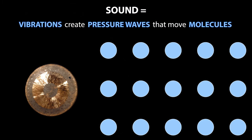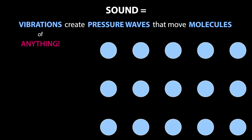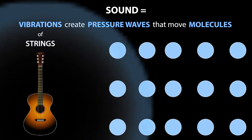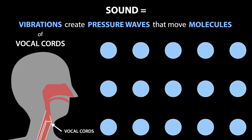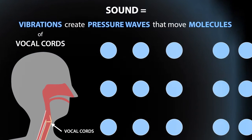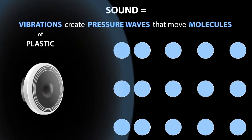Sound can be made from the vibrations of anything. Sound is made from the vibrations of guitar strings, of vocal cords, the vibration of plastic, the vibration of anything!